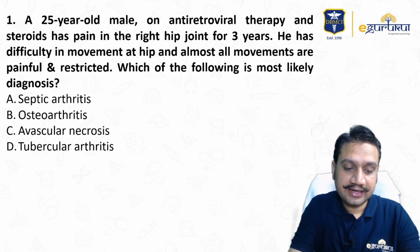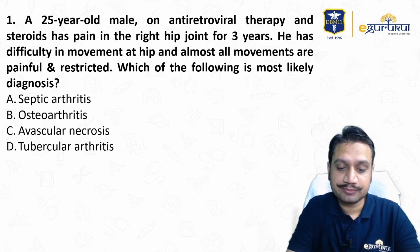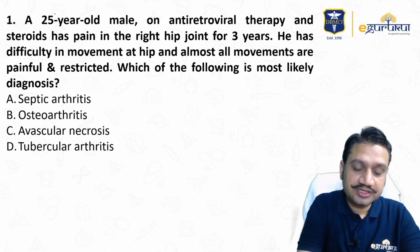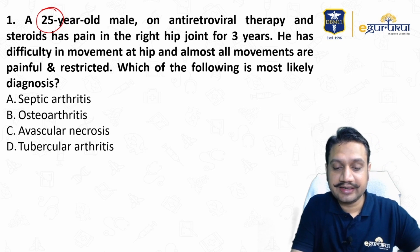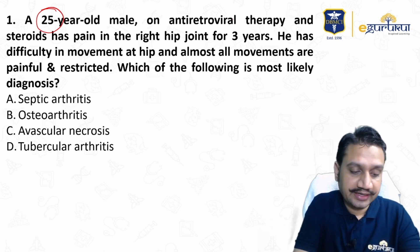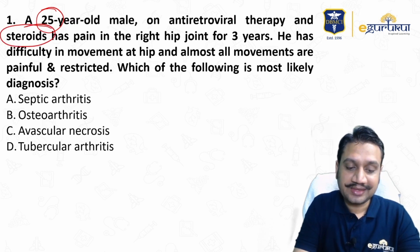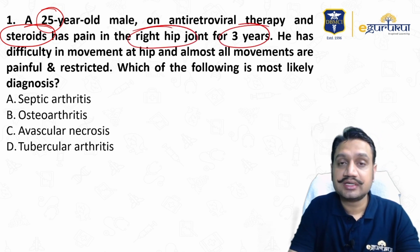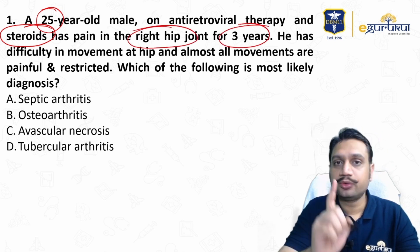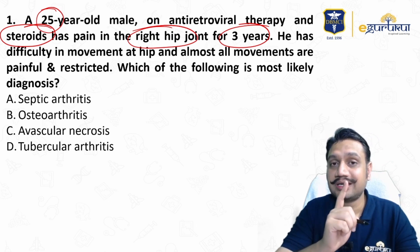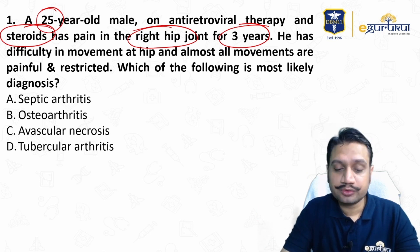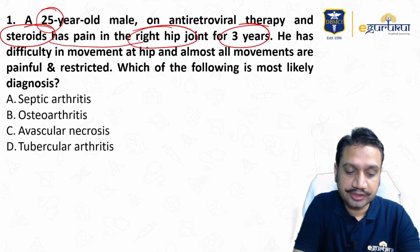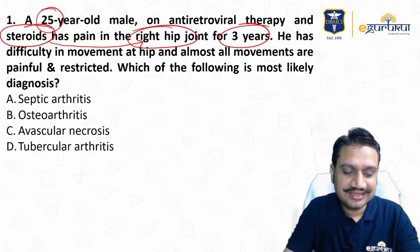The first question: a 25-year-old male on antiretroviral therapy and steroids has pain in the right hip joint for three years. The patient is on ART, taking steroids, and presents with right hip pain for three years. This tells us it's not an acute case — trauma is usually ruled out. The steroids are doing something wrong with the hip joint, and he has difficulty in movement.